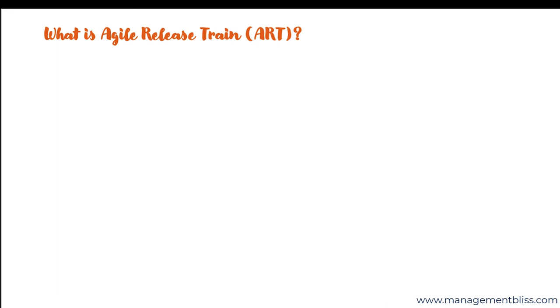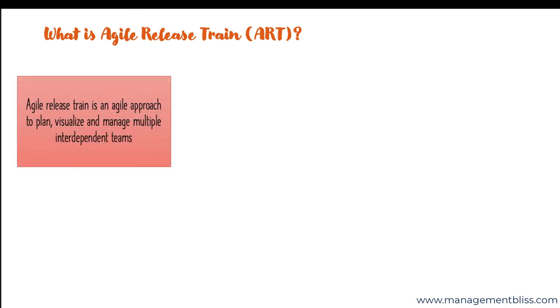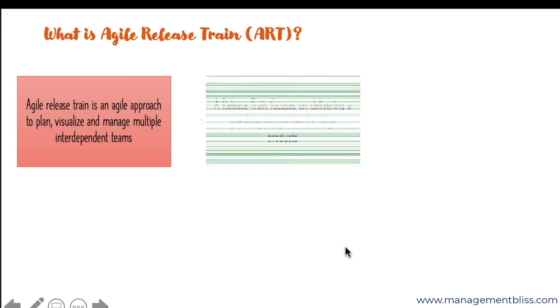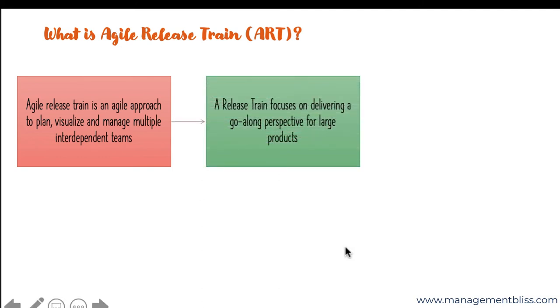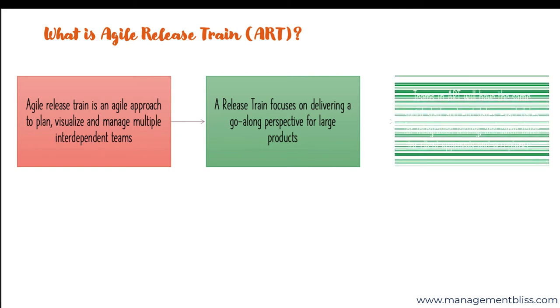What is Agile Release Train? Agile Release Train is an approach to plan, visualize and manage multiple teams. The Agile Release Train method provides a tempo to many groups for frequent and foremost synchronization. A Release Train focuses on delivering a go-along perspective for large products. Teams in a Release Train will sync with each other and have the same sprint start and end dates, exact dates for integration testing, and same dates for client approvals and acceptance testing.